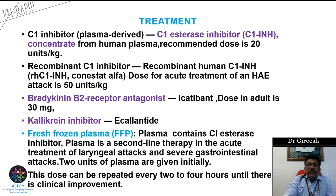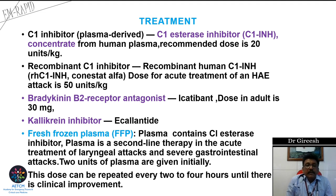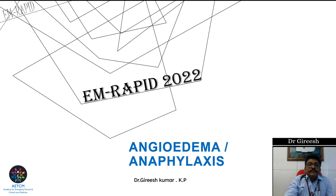Unlike anaphylaxis where treatment is adrenaline, H1 and H2 blockers, and steroids, hereditary angioedema requires entirely different treatment. Ideal options include plasma-derived C1 esterase inhibitor concentrate (20 units/kg), recombinant C1 inhibitor (50 units/kg), bradykinin B2 receptor antagonist, or kallikrein inhibitor. Since these drugs are not routinely available, fresh frozen plasma (FFP) is given — two units initially, repeated every two to four hours until clinical improvement.